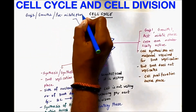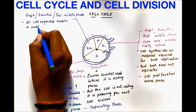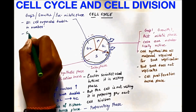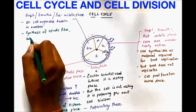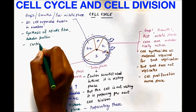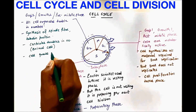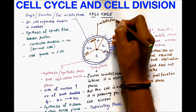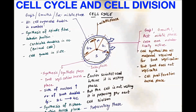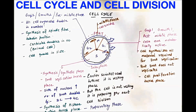G2 stands for Gap 2, Growth 2, or pre-mitotic phase. All cell organelles in G2 double in number. There is synthesis of spindle fibers and tubulin proteins, and centrioles double in number in animal cells. The cell grows in size, and once the CDK checks it, the cells are allowed to enter M phase — the mitotic phase — where the actual cell division takes place, divided into PMAT: prophase, metaphase, anaphase, and telophase.